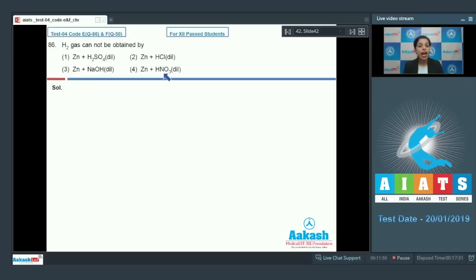Zinc reacts with nitric acid, dilute nitric acid. In this case, hydrogen gas is not evolved. This is the case in which hydrogen gas is not evolved. Why? Because this HNO3 is a very strong oxidizing agent.